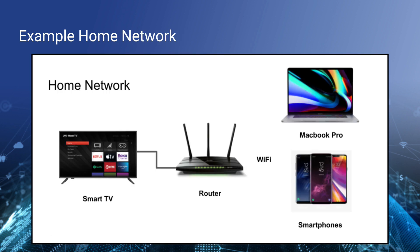Here's an example home network. You've got a wireless router from your internet service provider — maybe it's plugged into your smart TV so it can give internet access to browse Netflix, HBO, and other services. A lot of routers have Wi-Fi built in, so it can connect to a MacBook Pro or a smartphone.